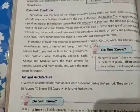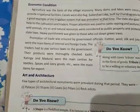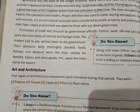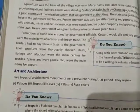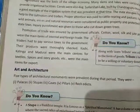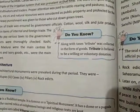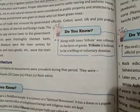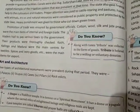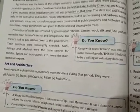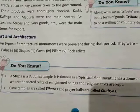Traders had to pay various taxes to the government, and their products were thoroughly checked. Kashi, Kalinga, and Madurai were the main centers for the textile industry. Spices and ivory goods were the main items for export. Along with taxes, tribute was also collected in the form of goods — tribute being a willing or volunteered donation.